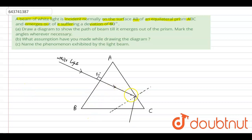So incident angle is 60 degree, which is given here also 60 degree. This is white light.